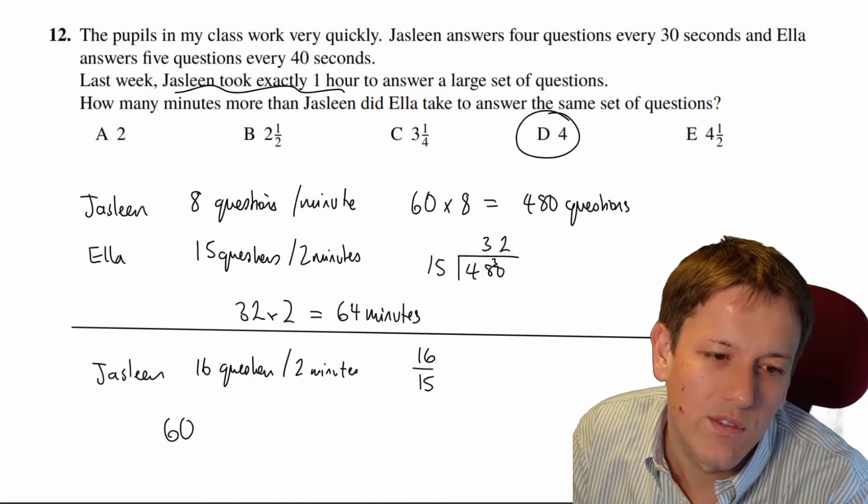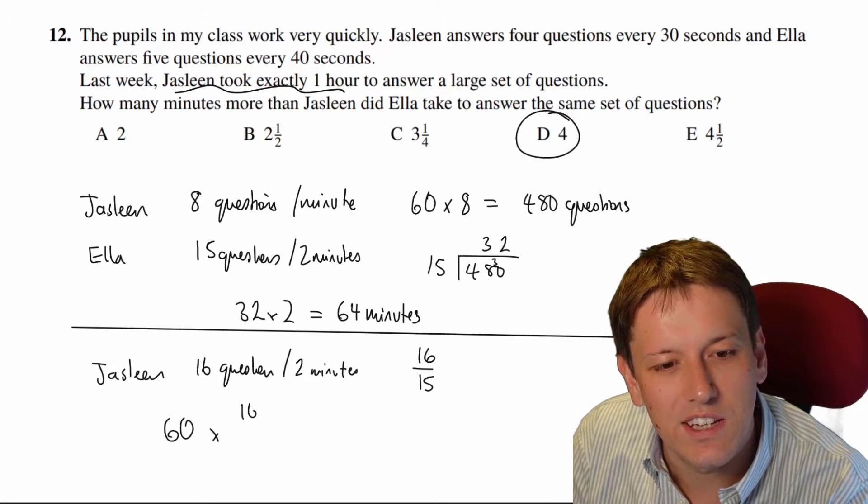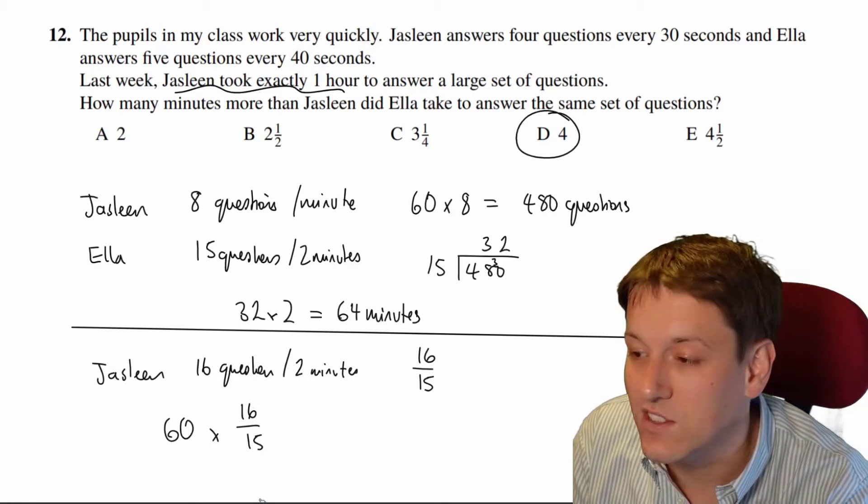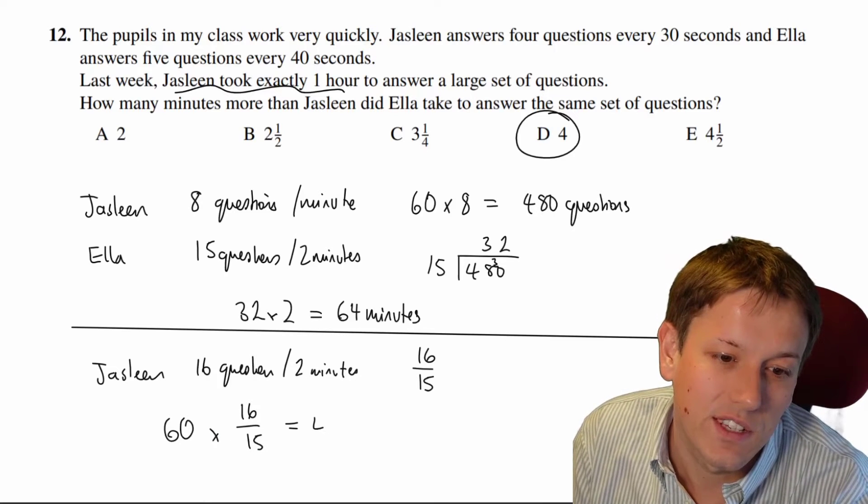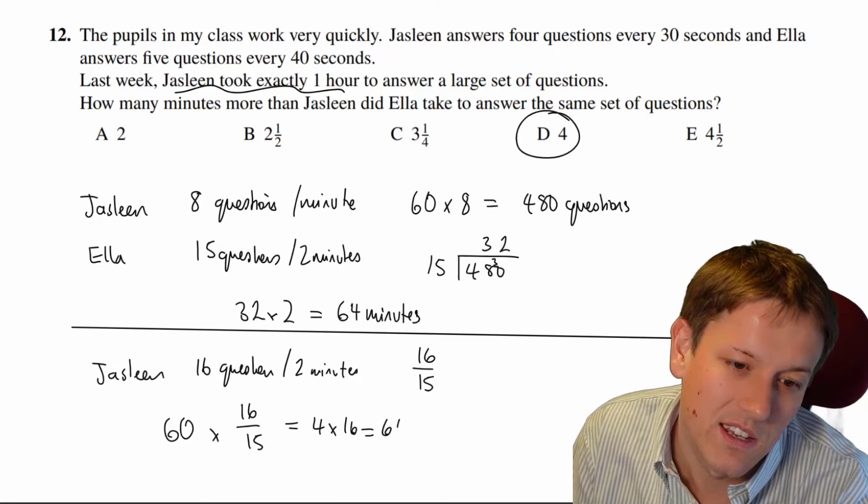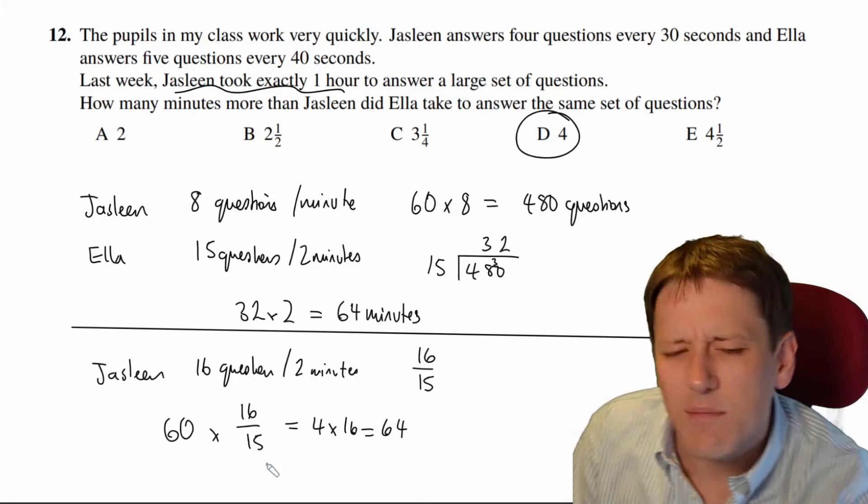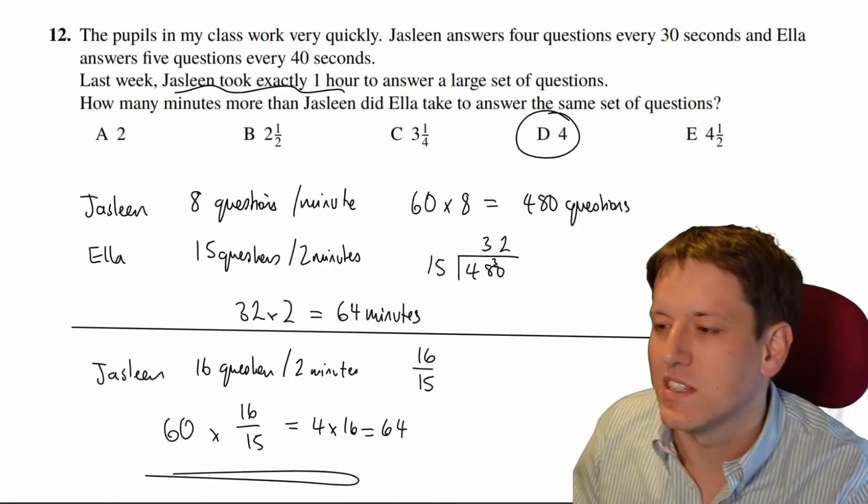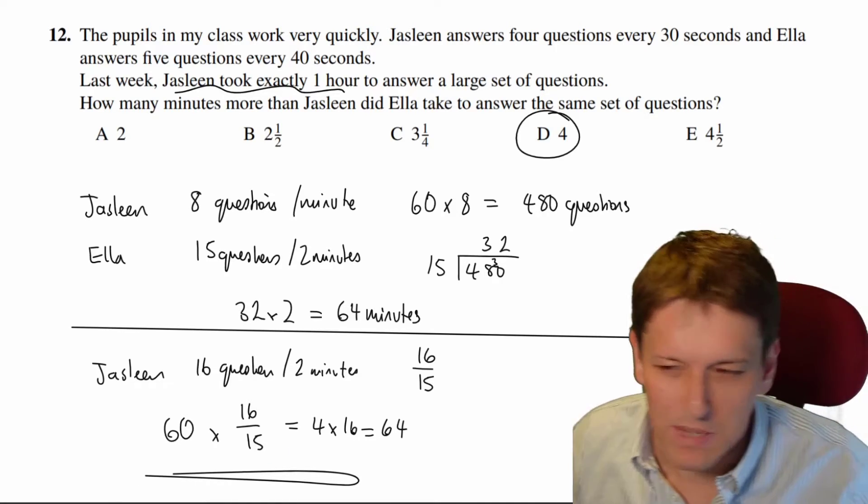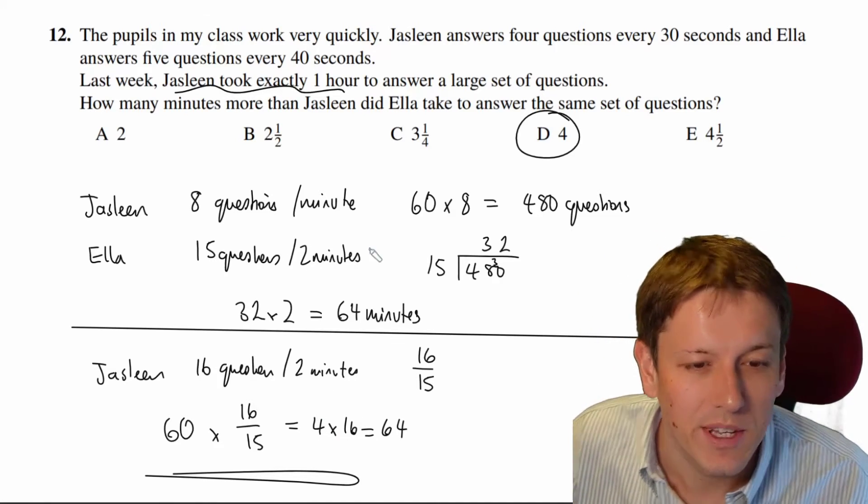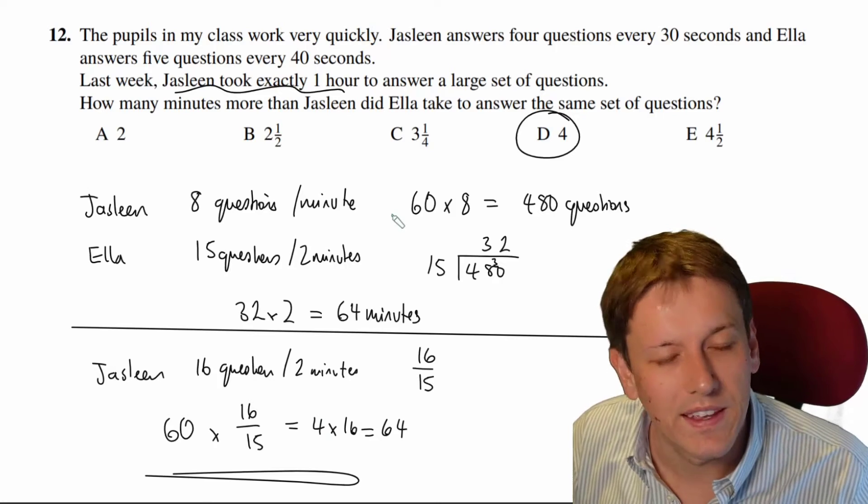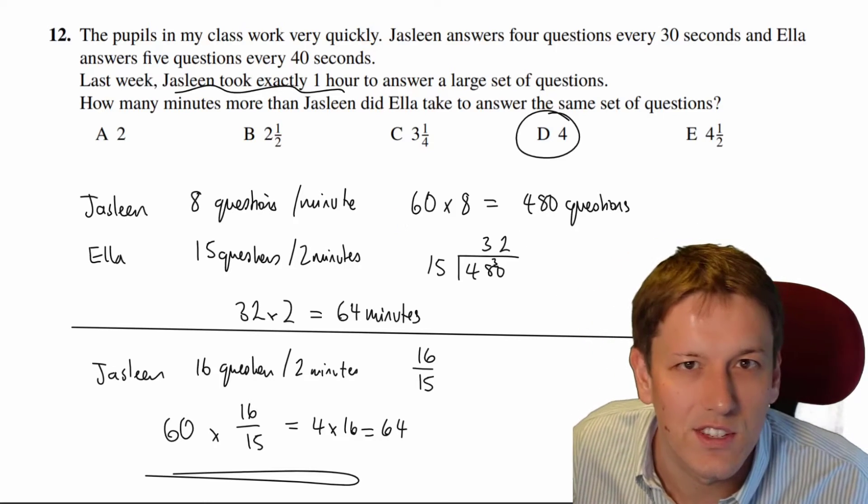So you could here if you really think about this carefully just say we just need to do 16 times 16/15 to work out the time that Ella takes. 16 times 60 over 15 is 4 so that's 4 times 16 which is 64. That method requires a bit more of a deeper understanding of speed and time and things but it's a very efficient method if you can spot it. I think most people would do it the first way and that would be a great answer for the Junior Maths Challenge.